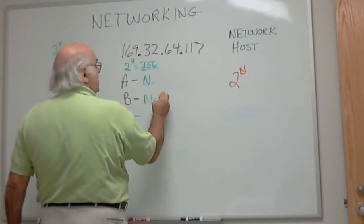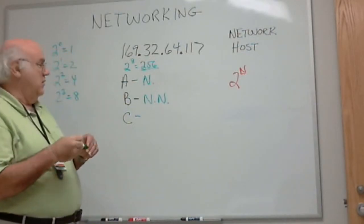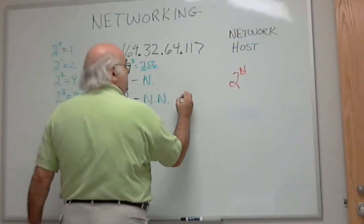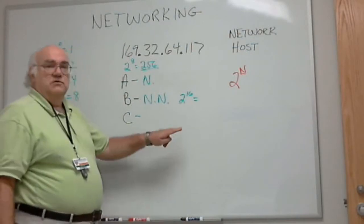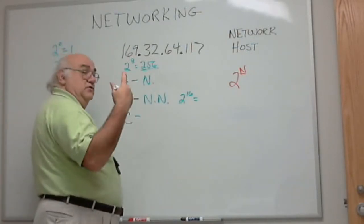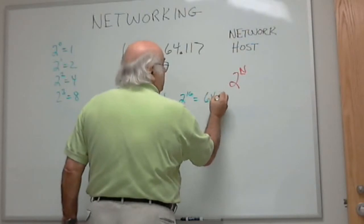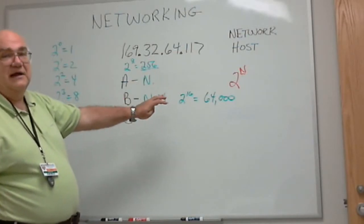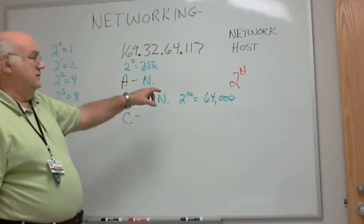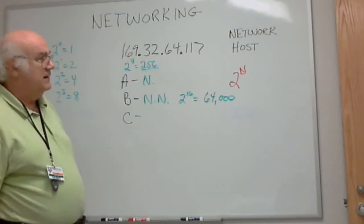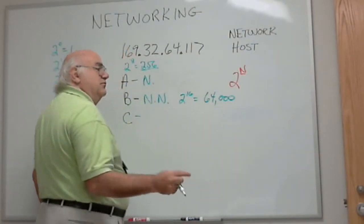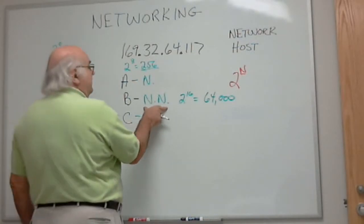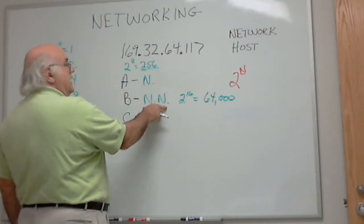In class B, we took two bytes for our network portion. Eight bits plus eight bits is sixteen bits - two to the sixteenth power. Two to the sixteenth power is approximately 64,000. Now I've rounded that. Each thousand is actually 1,024, so 64 times 1,024 would be the correct answer. But you can round it generally to 64,000. So we had 64,000 possible network addresses with a class B.